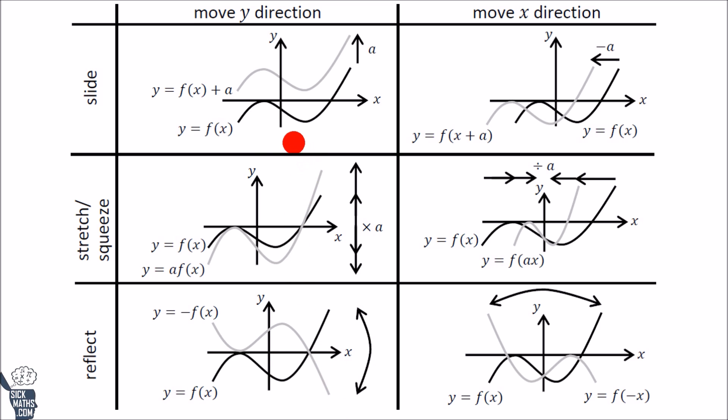You get vertical transformations when you're doing stuff outside the function, like here. The opposite is when you do stuff inside the function, inside this bracket, which transforms graphs horizontally. So in this column,